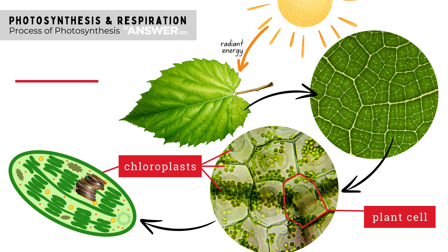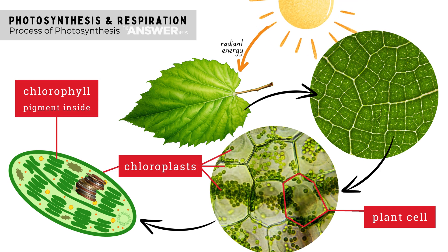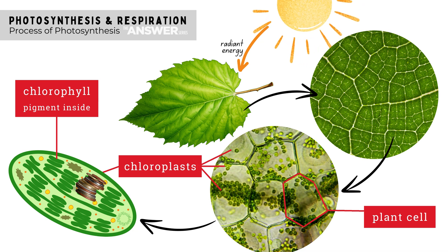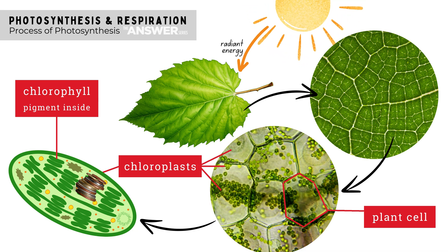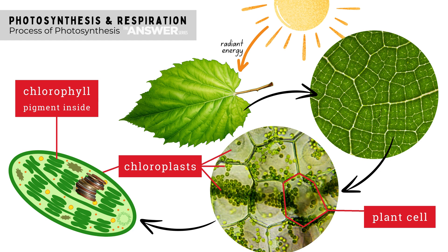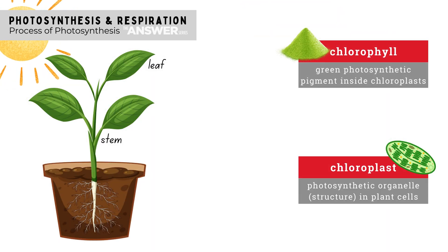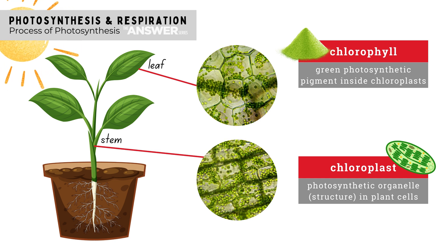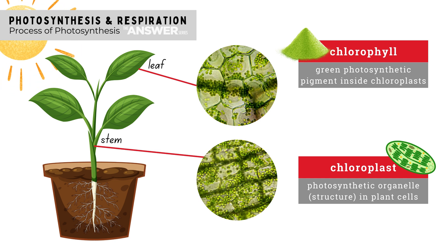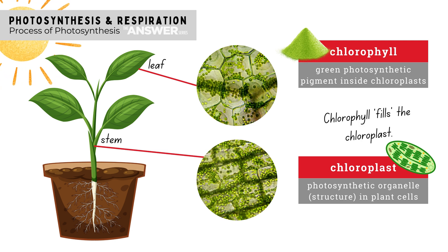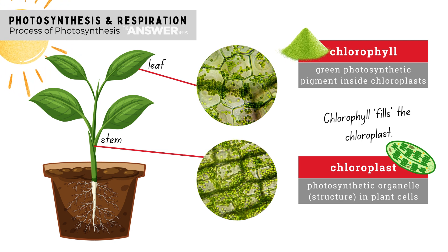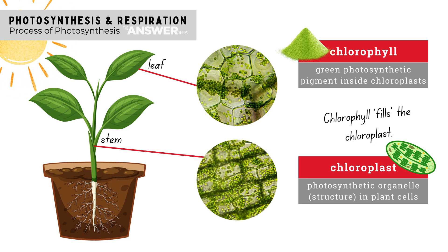Inside these membranes is a magic pigment called chlorophyll. Chlorophyll is a green photosynthetic pigment — it gives the chloroplast its green color. Any green parts of a plant, for example its leaves or stems, will get their green color from the presence of chloroplasts filled with chlorophyll. To remember the difference between these two confusing terms, think of the phrase: chlorophyll fills the chloroplast.